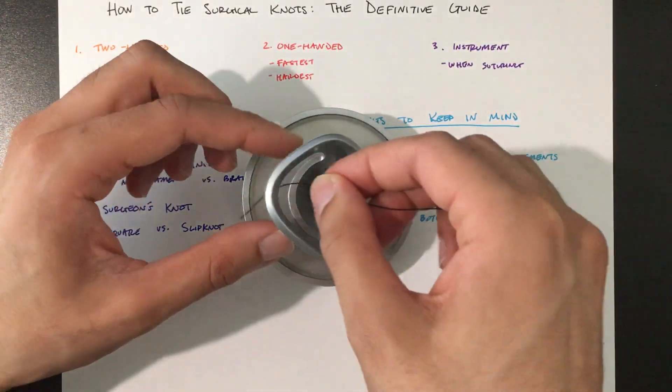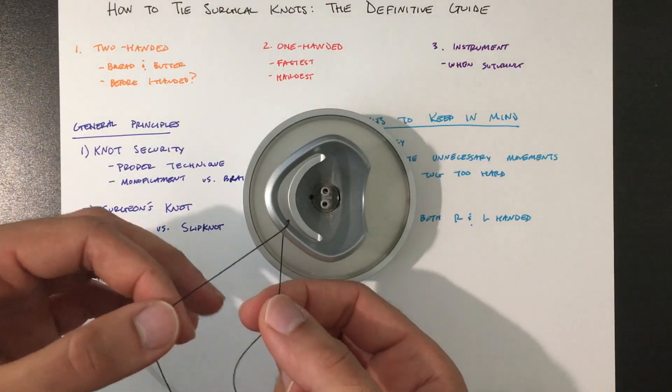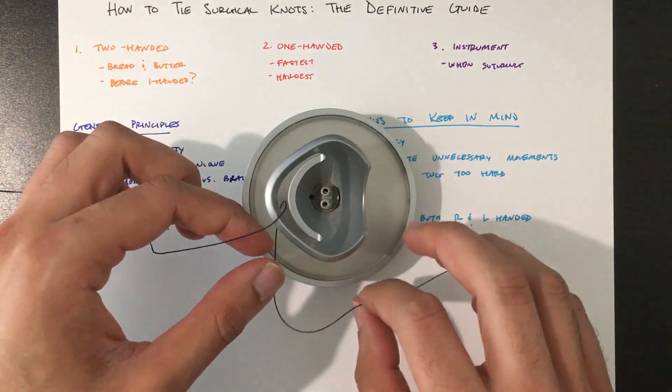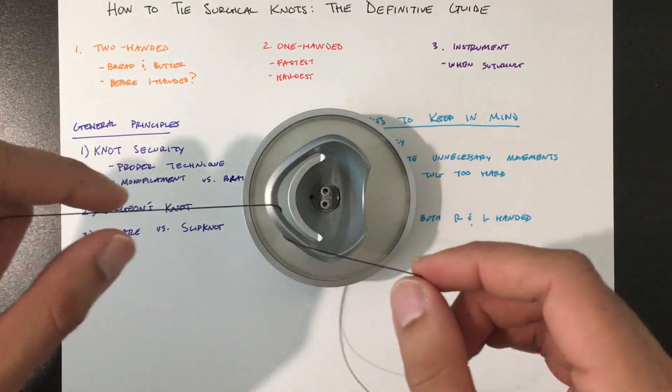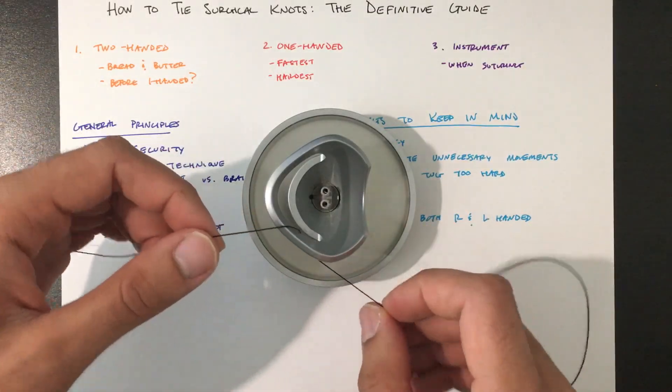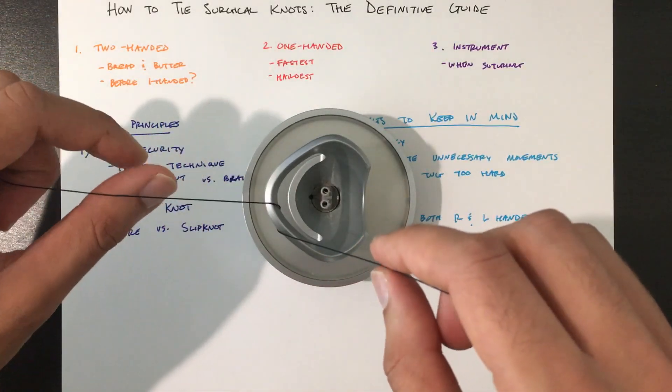So first I'm going to show you a two-handed. So what I do to make sure I start off square is actually criss-cross and the bottom one goes to the right, the top one goes to the left. Figure out what system works best for you. This just helps me throw the first knot square.